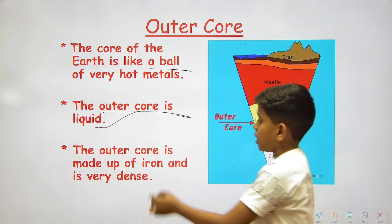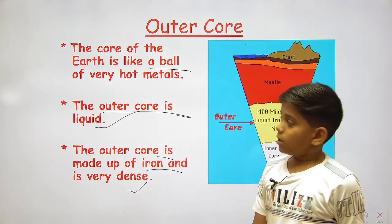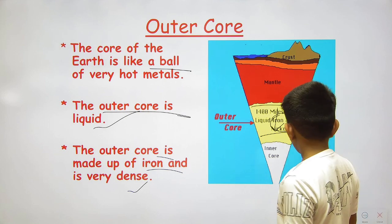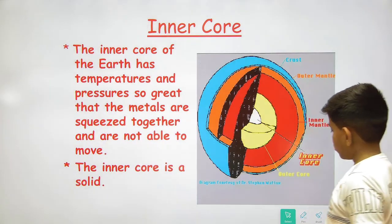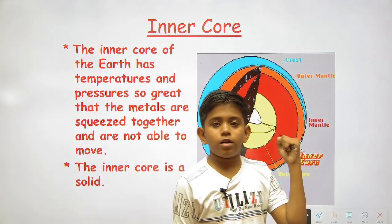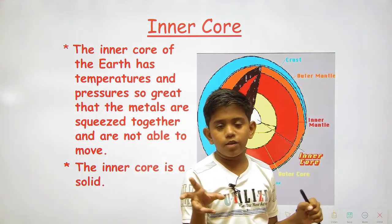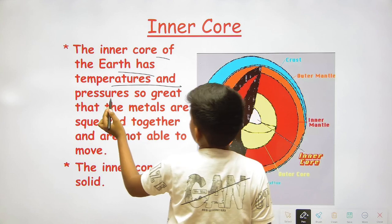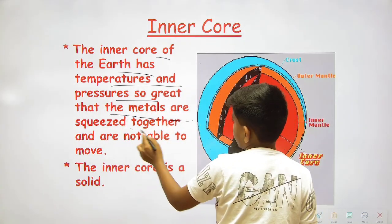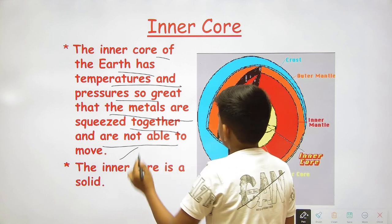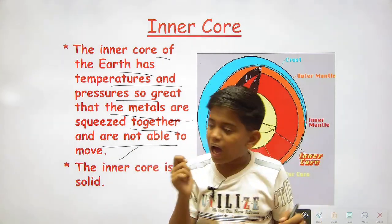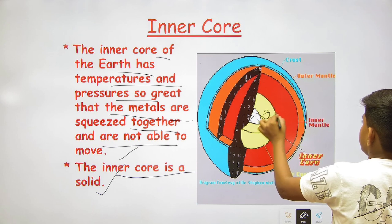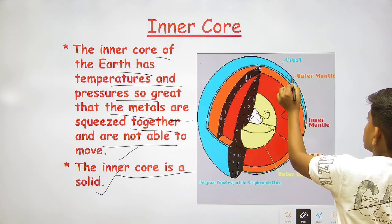The core of the earth is like a ball of very hot metals. The outer core is liquid and made up of iron and is very dense. The inner core is hard because of the tremendous temperature and pressure, so the metals are squeezed together and are not able to move, making it very hard and solid.